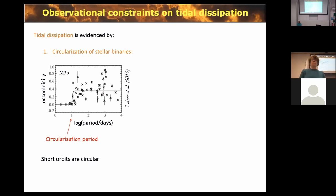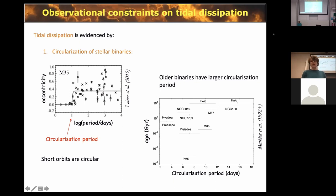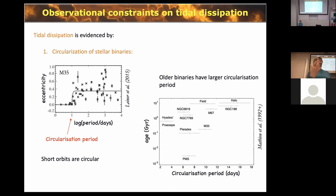We think circularization is due to tidal dissipation because if you look at all binaries, they have a larger circularization period as they age. Older stars, like in the field and the halo, have a longer circularization period; younger clusters have a shorter one. Older stars have had more time for tides to be dissipated, so by measuring the circularization period as a function of age you can constrain how much dissipation has occurred.